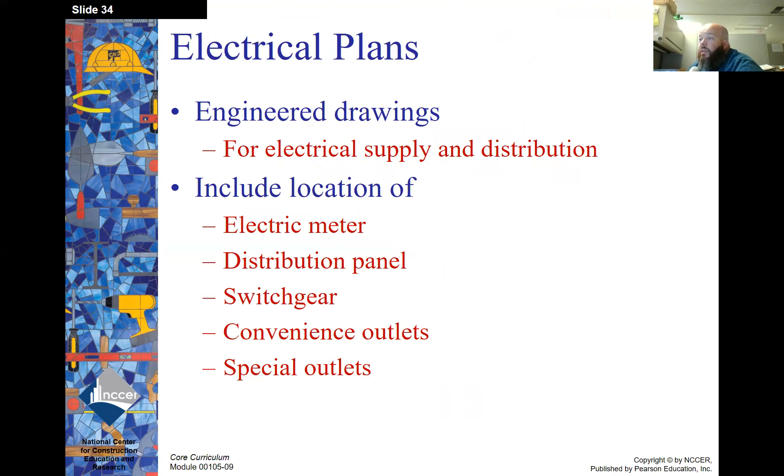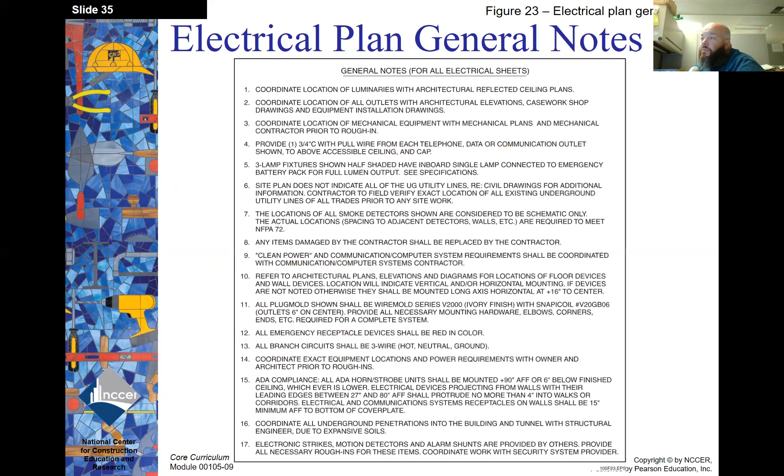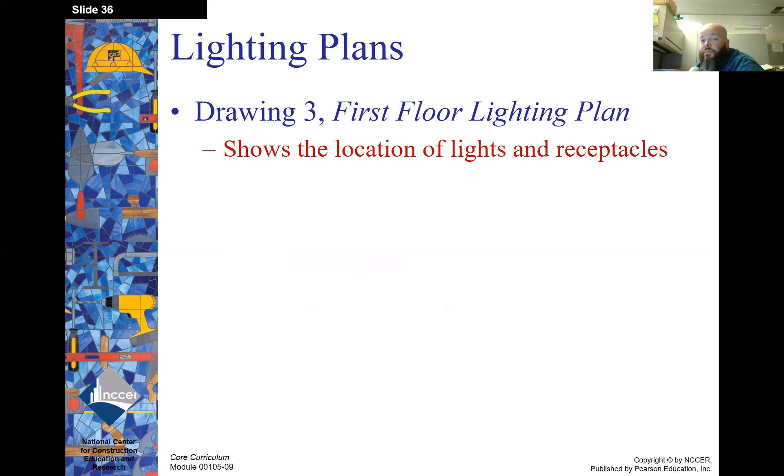Electrical plans. These are engineered drawings for electrical supply and distribution. They include the location of the electric meter, the distribution panel, switch gear, and the convenience outlets and any special outlets. Here's an example of general notes for the electrical plan. Lighting plan. Drawing three is the first floor lighting plan. It shows the location of lights and receptacles.